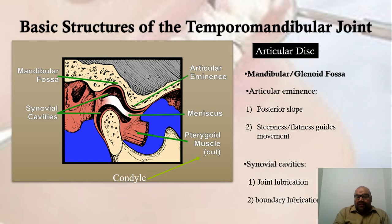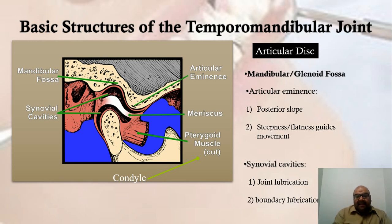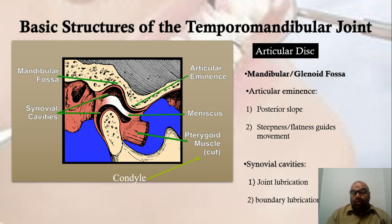Briefly reiterating the structures of the TMJ and how they relate to function: we have the condylar process, the temporal bone, and the articular eminence with its posterior slope. The steepness and flatness of the articular eminence guides the movement of the condyle within the mandibular fossa — this is known as posterior guidance. Posterior guidance is the guidance provided by the articular eminence to the condyle so it can move inside the glenoid fossa.